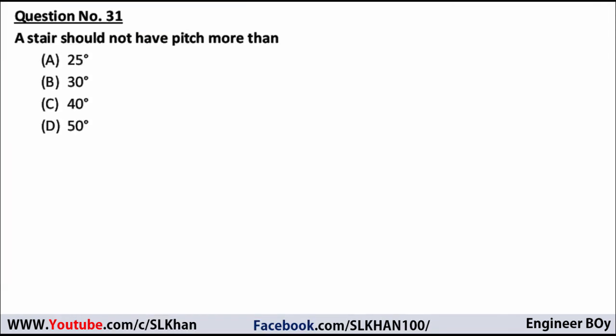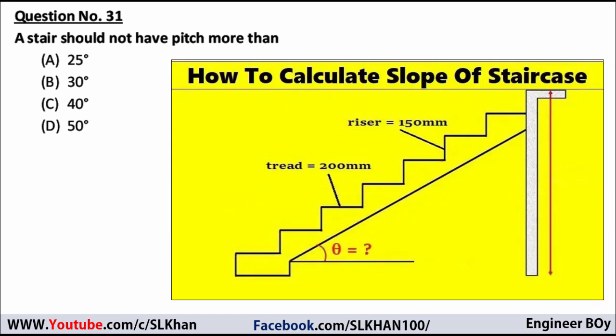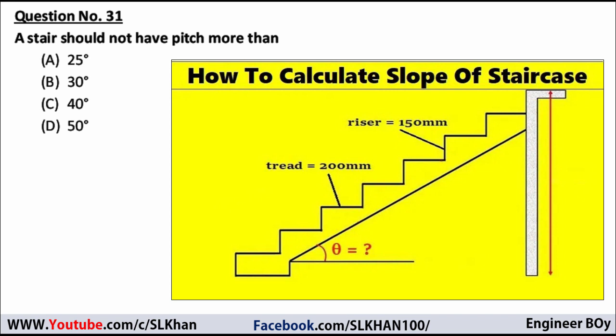Question 31: a stair should not have a pitch more than 25, 30, 40, or 50 degrees? The pitch of the stair is the angle the waist makes with the horizontal, or the ratio of rise to run — tangent of theta. As I have studied, a stair should not have a pitch less than 25 degrees or more than 40 degrees. So the correct answer to question 31 is option C — 40 degrees.